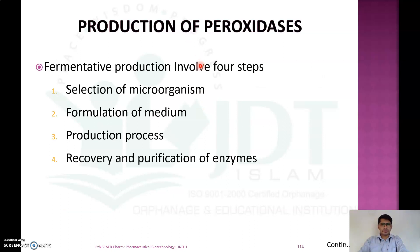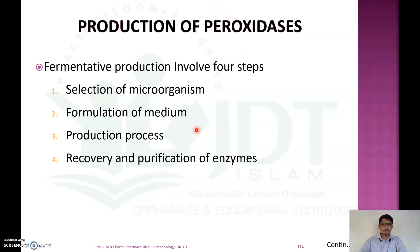The production of peroxidase enzyme is usually done by fermentative method and involves four main steps: first, selection of a suitable microorganism; second, selection and formulation of the culture media; third, the production process with optimum fermentation conditions; and finally, recovery and purification of the enzyme.